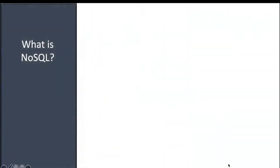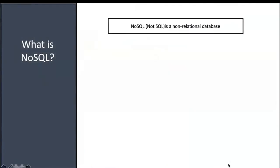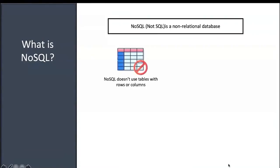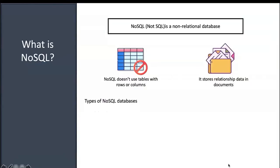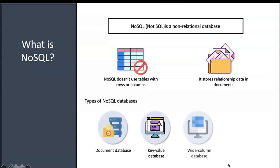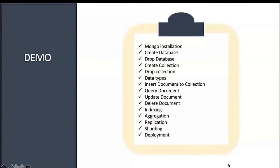NoSQL is a completely non-relational database. It doesn't use tables with rows and columns like a traditional RDBMS. Instead, it stores relationship data in documents. Different types of NoSQL databases are available: document-based, key-value based, wide-column based, and graph-based. MongoDB is a purely document-based database. Now let's go ahead with some demonstrations on how MongoDB installation works.